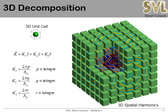Extending to three dimensions is straightforward. k_x and k_y are calculated the same way, and now we add k_z with another integer r, giving integers (p,q,r) distributed over a three-dimensional Fourier space grid. Each block in that grid represents the same size as the unit cell, showing the planar grating inside weighted by its Fourier series coefficient. To generate a spatially variant 3D lattice, we take each planar grating, spatially vary it on its own, then add up all individual spatially variant gratings to get the final lattice.